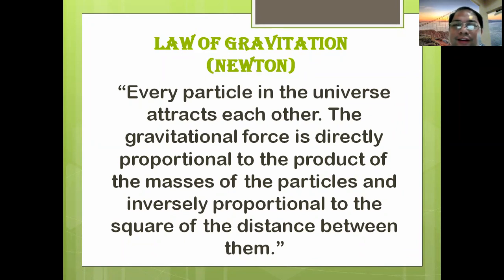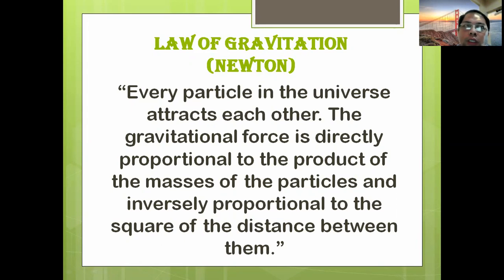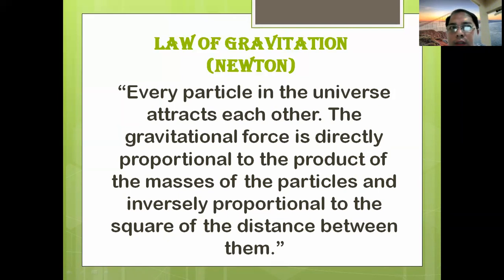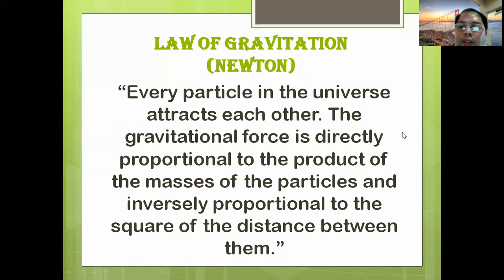Just imagine if the Earth does not have gravitational pull — all of us would be flying in the air, and we could not put things in our house. Gravity is kind of good because it keeps things intact on the ground. We also have an atmosphere, air, clouds, and raindrops because of gravity. Unlike the Moon, which has very little gravity — only about one-sixth that of the Earth — it cannot hold any atmosphere at all, making the existence of life on the Moon remote or even impossible.